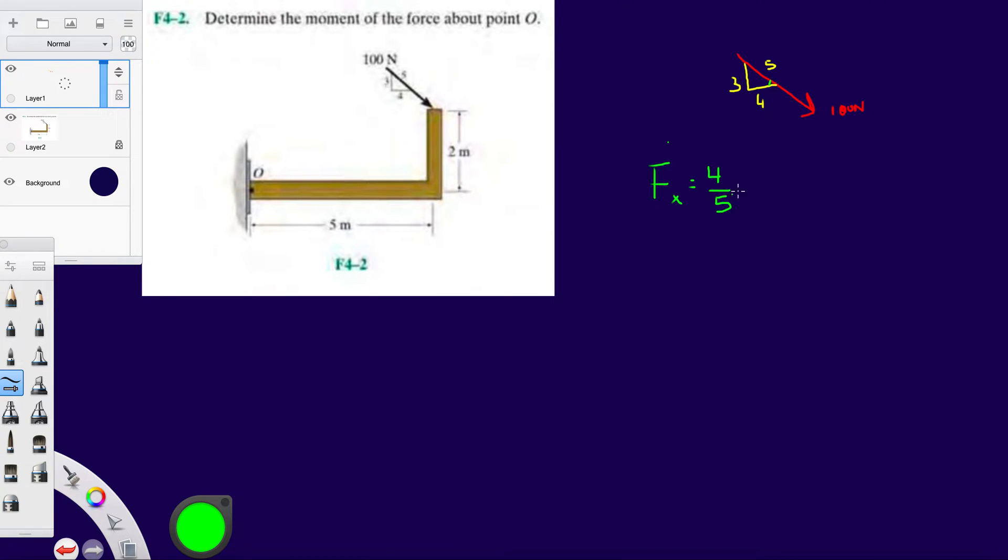And then in the y-direction, do the same thing. What's the side that's aligned with the y-axis? Well, it's going to be 3 over the hypotenuse times 100. Now we got 60 Newtons.